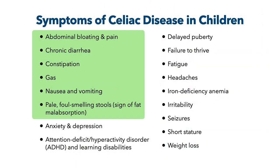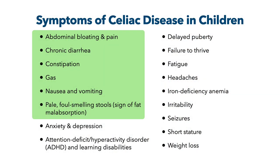In kids, symptoms include abdominal bloating and pain, anxiety and depression — a neurological problem — ADHD, learning disabilities, chronic diarrhea, constipation, damage to tooth enamel, delayed puberty, and failure to thrive. That's actually what I see most in pediatric cases — the inability for the child to gain weight and match up on the growth curves with their peers. They can also get fatigue, intestinal gas, headaches, iron deficiency anemia, irritability, nausea and vomiting, foul-smelling stools, seizures, lack of muscle coordination, short stature, and weight loss.